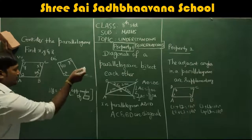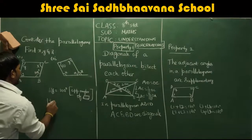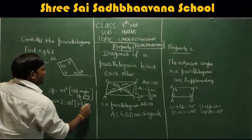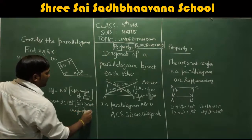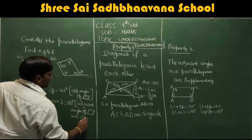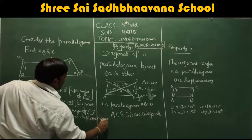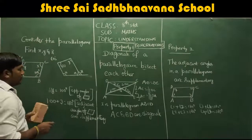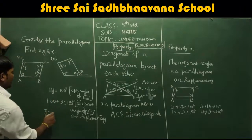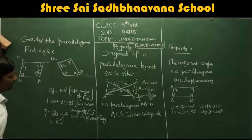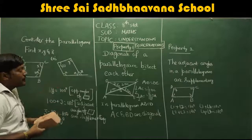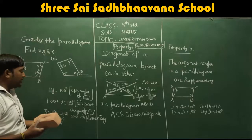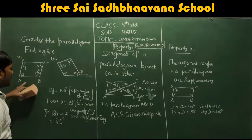Now for Z: using property 2, adjacent angles of a parallelogram are supplementary. So 100 plus Z equals 180 degrees. Therefore Z equals 180 minus 100, which gives Z equals 80 degrees. Always write the reason — because without the reason, your answer may not be considered. So Z is 80 degrees because adjacent angles of a parallelogram are supplementary.